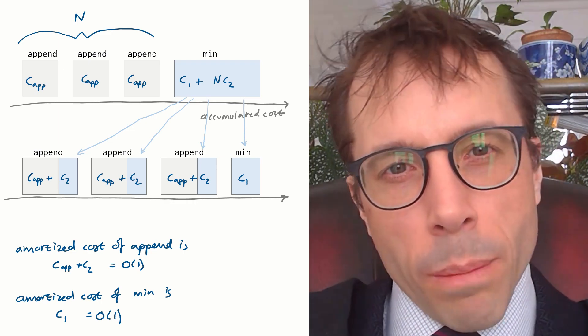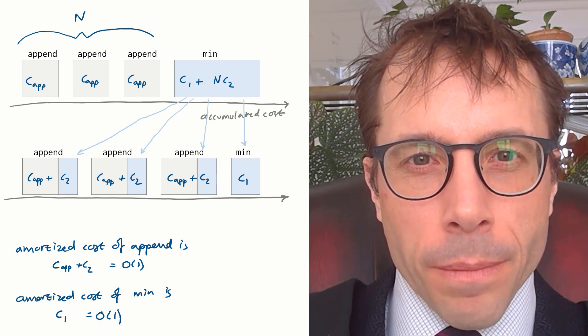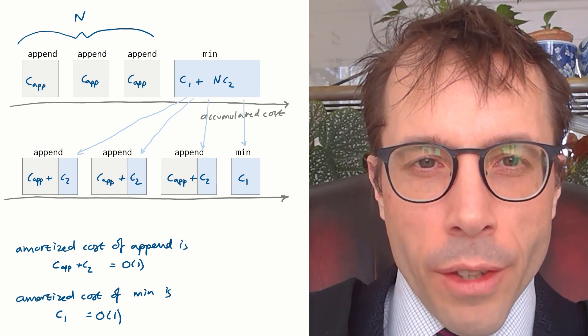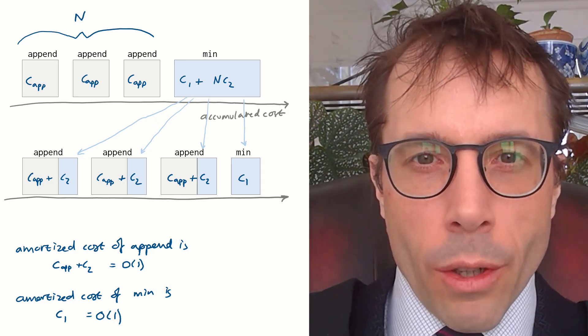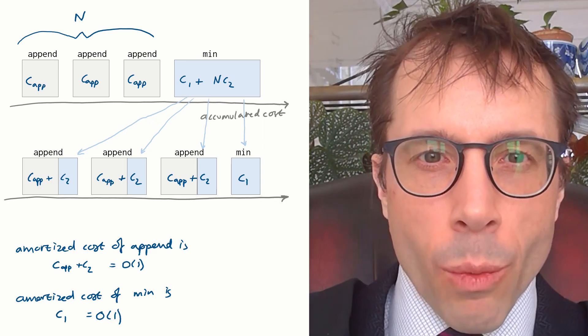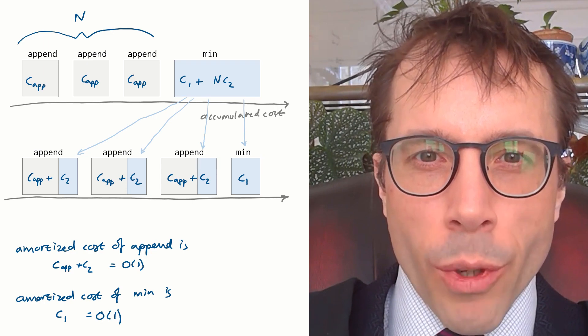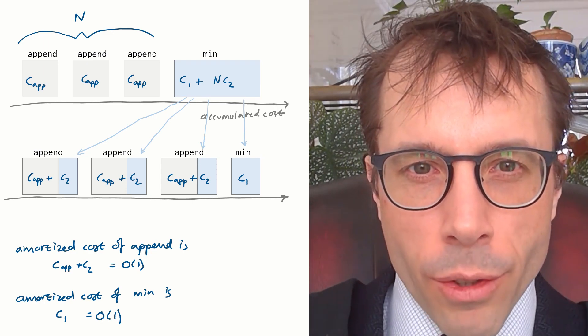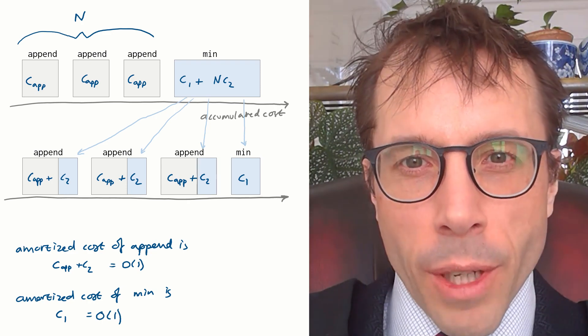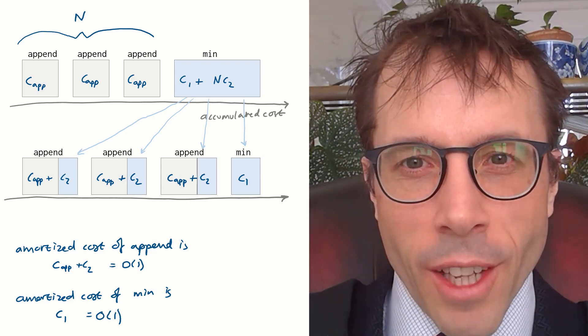So why are we playing these accounting games? The whole idea is to try and make it easier to reason about aggregate costs. Remember from the last video we talked about the hare and the tortoise, and we said that what matters for a data structure is the aggregate cost of a sequence of operations, and we also said that big O bounds aren't very much use unless they're tight.